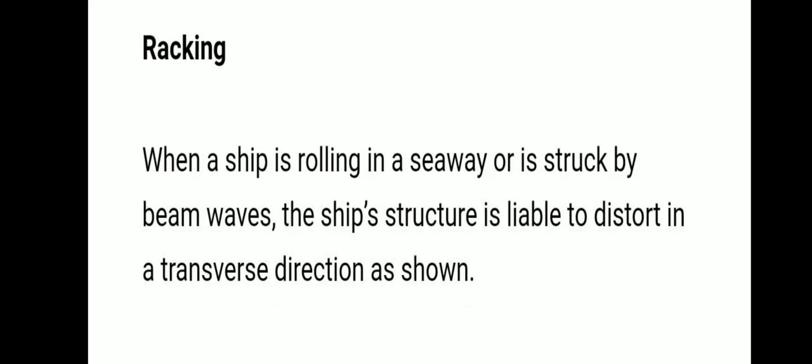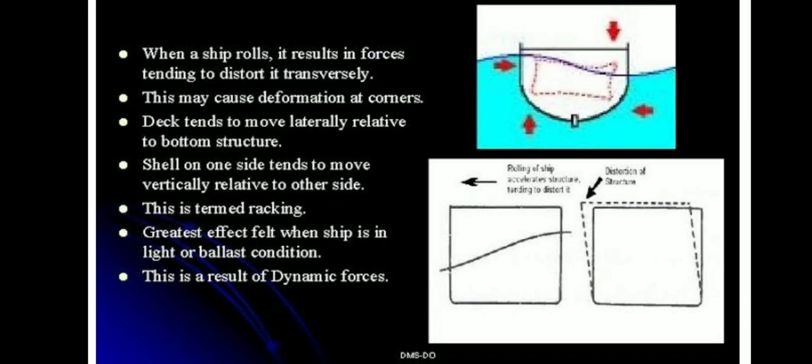The next type is racking, which is a transverse stress. When a ship is rolling in a seaway or struck by beam waves, the ship's structure is subjected to distortion in the transverse direction. This is known as racking. Some forces result that tend to distort the ship transversely, causing deformation at the corners of the ship.